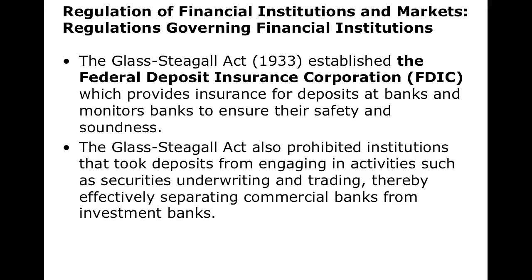The Glass-Steagall Act in 1933 also created the Federal Deposit Insurance Corporation, which provides safety for investors and banks. It also prohibited institutions that took deposits from engaging in activities like security underwriting and trading, effectively separating them from investment banks. The FDIC is beneficial: at one point the limit was $100,000, and during the financial crisis they increased that to $250,000. That way, there would be no run on the banks — if the government backs up your deposits, you won't rush to take your money out.